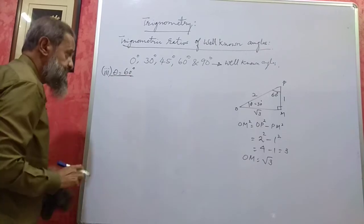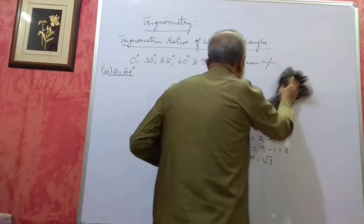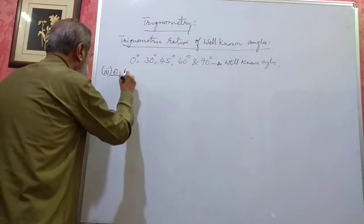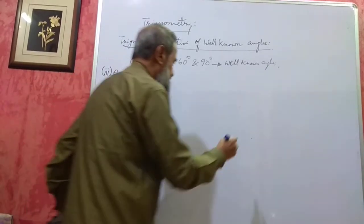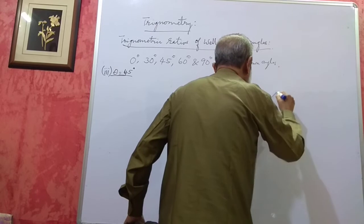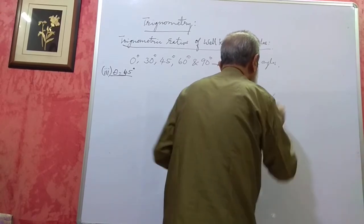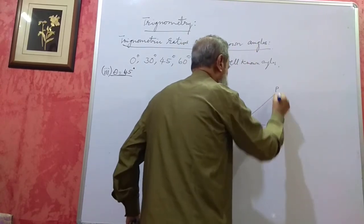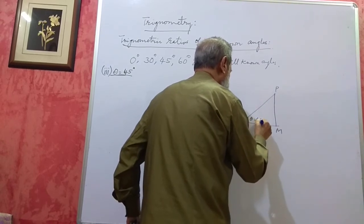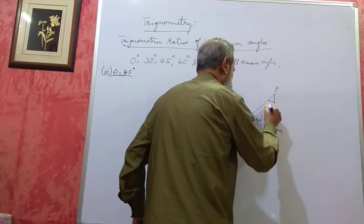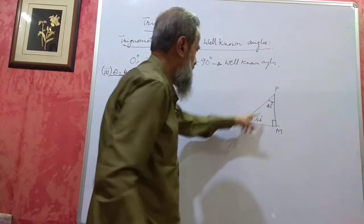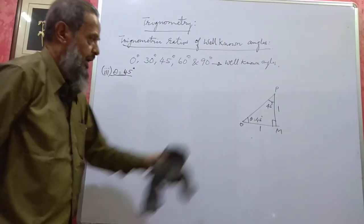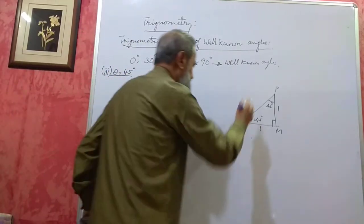Now theta is 45 degrees. In triangle OPM, if theta is 45° and the right angle is 90°, the remaining angle is also 45°. These two angles are equal so the two sides PM and OM are in the ratio 1:1. If PM = 1 and OM = 1, applying Pythagoras: OP = √(1² + 1²) = √2.